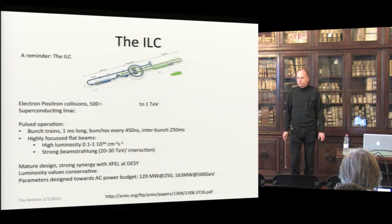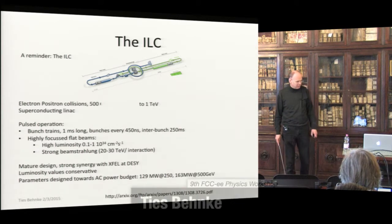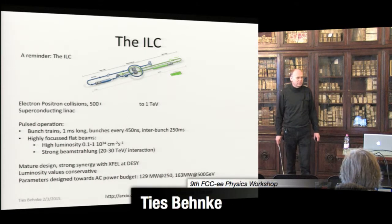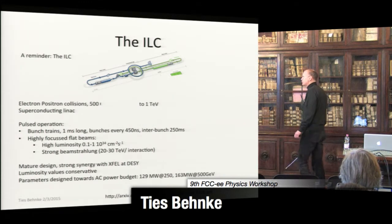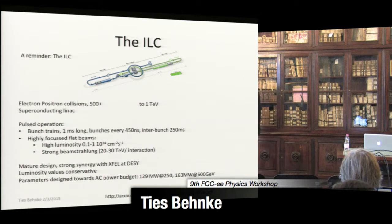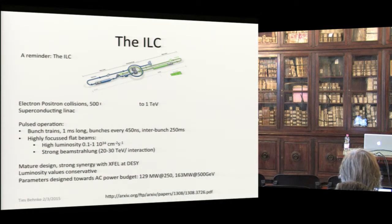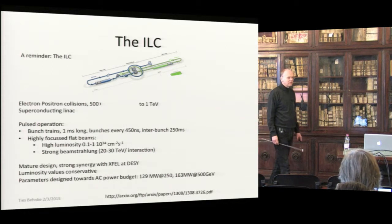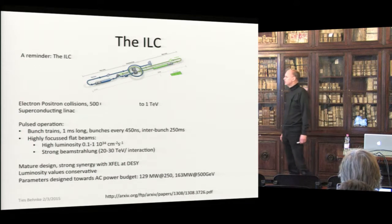Let me remind you what the ILC is, pointing out a few things which are different from or similar to the FCC-ee being discussed here. The ILC is of course linear — the biggest difference. It is a linear collider designed for e+ e- collisions at 500 GeV, upgradable to 1 TeV if funding is found.